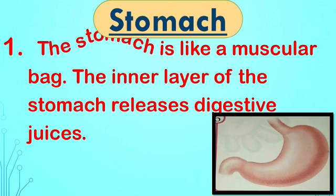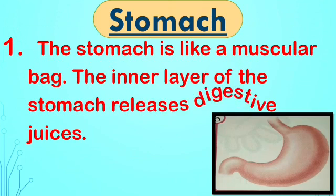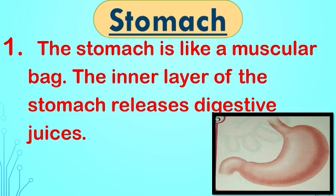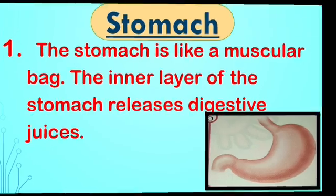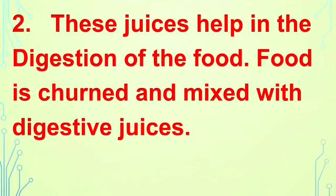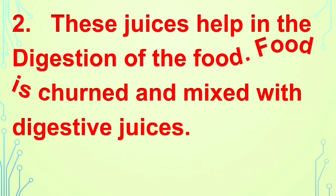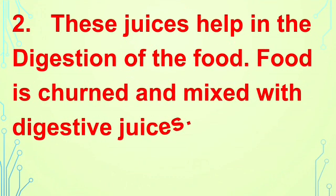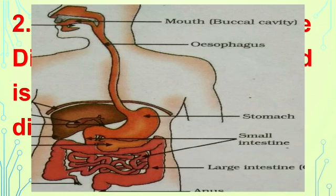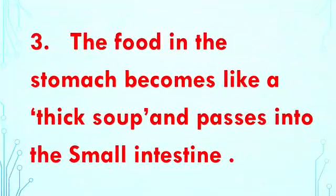The stomach is like a muscular bag — if you see it in the picture, it looks like the letter J. The inner layer of the stomach releases digestive juices, and these juices help in the digestion of food. The food is churned and mixed with the digestive juices.